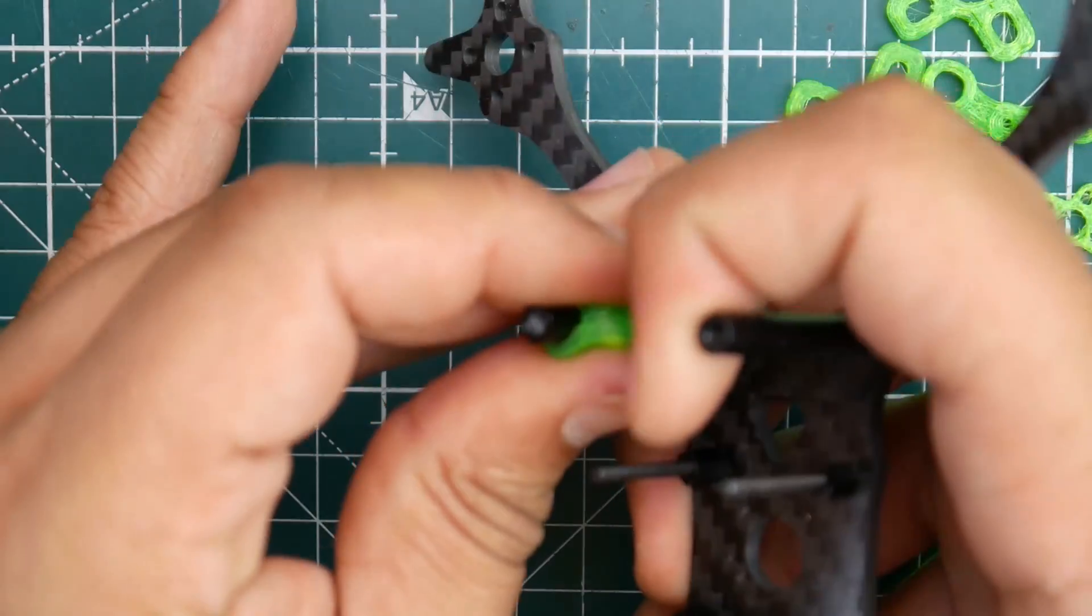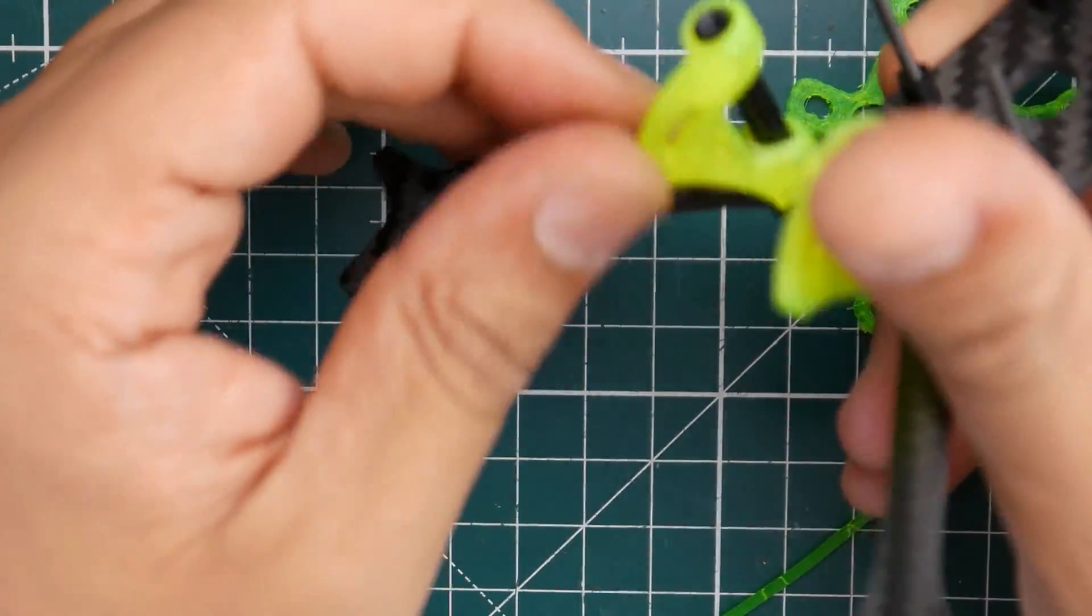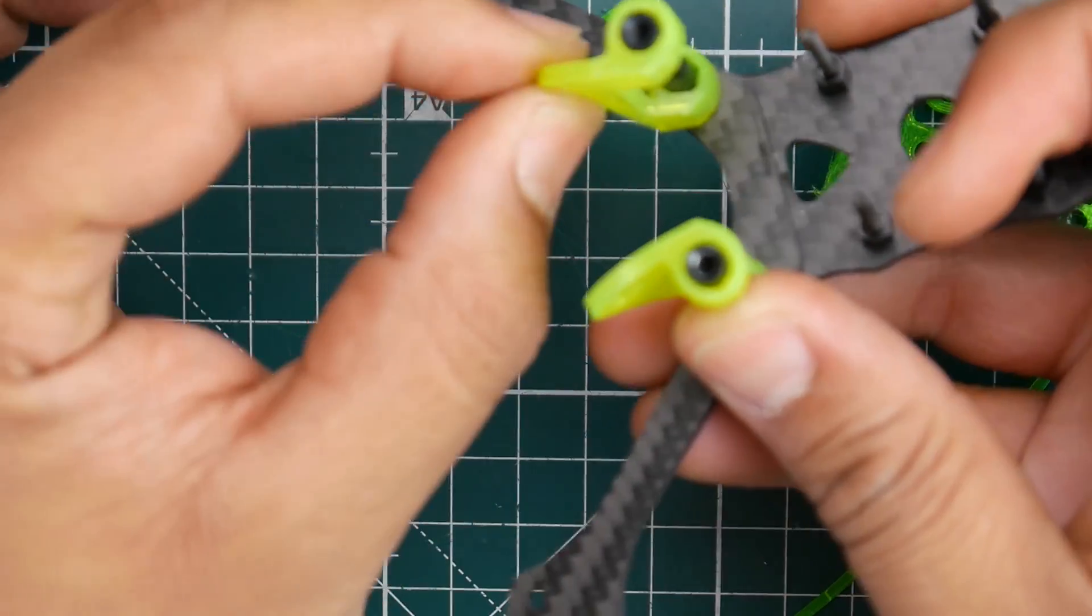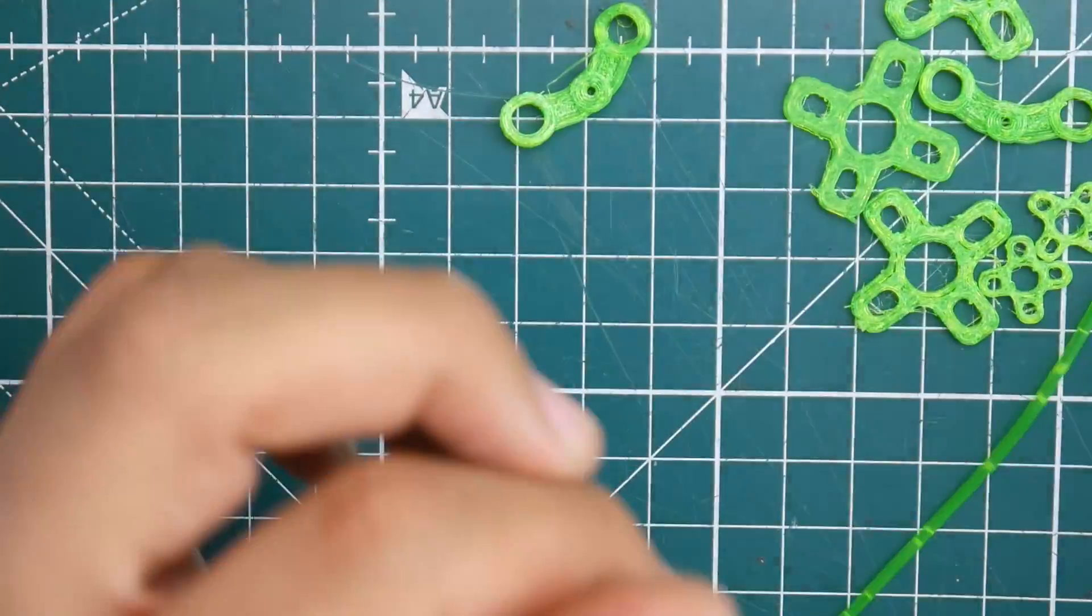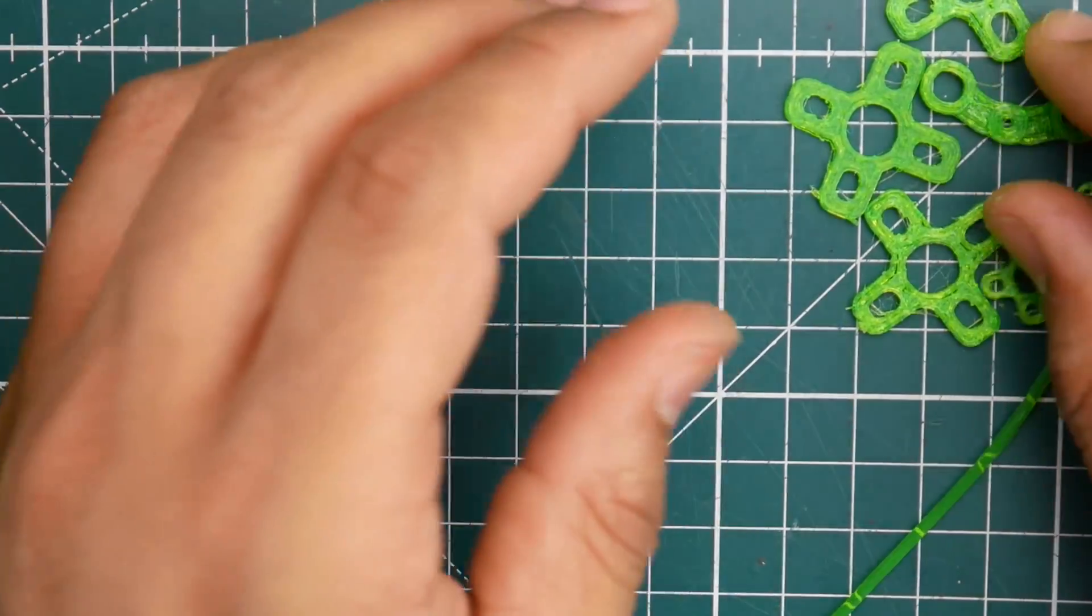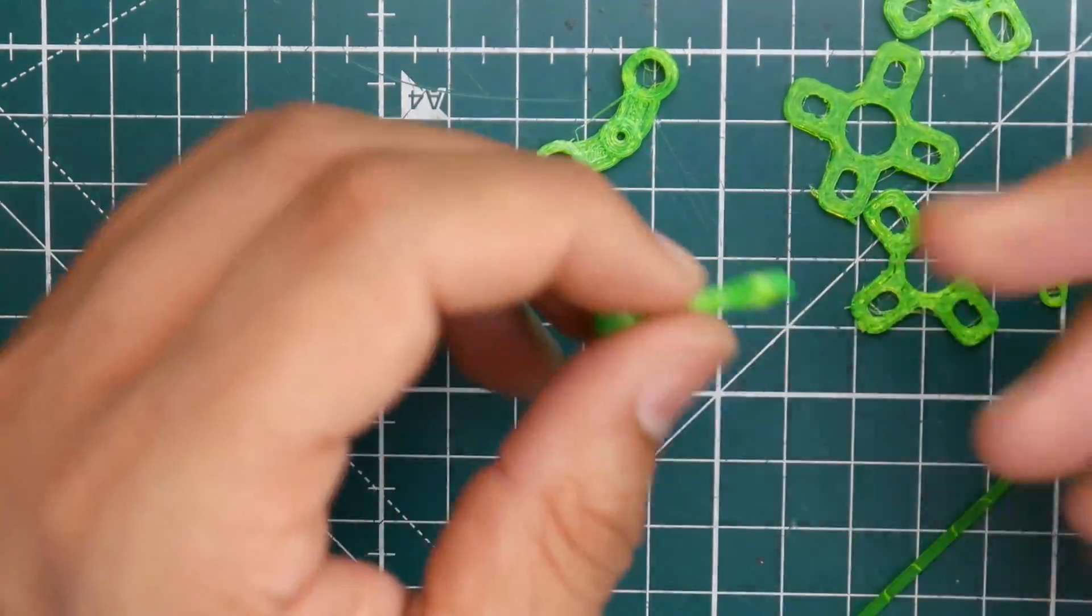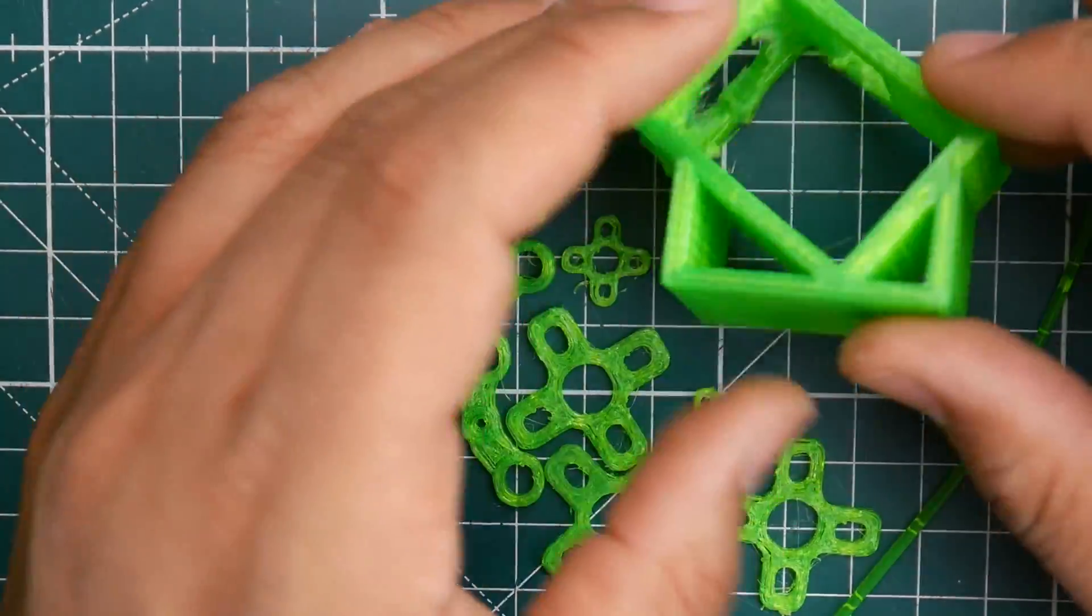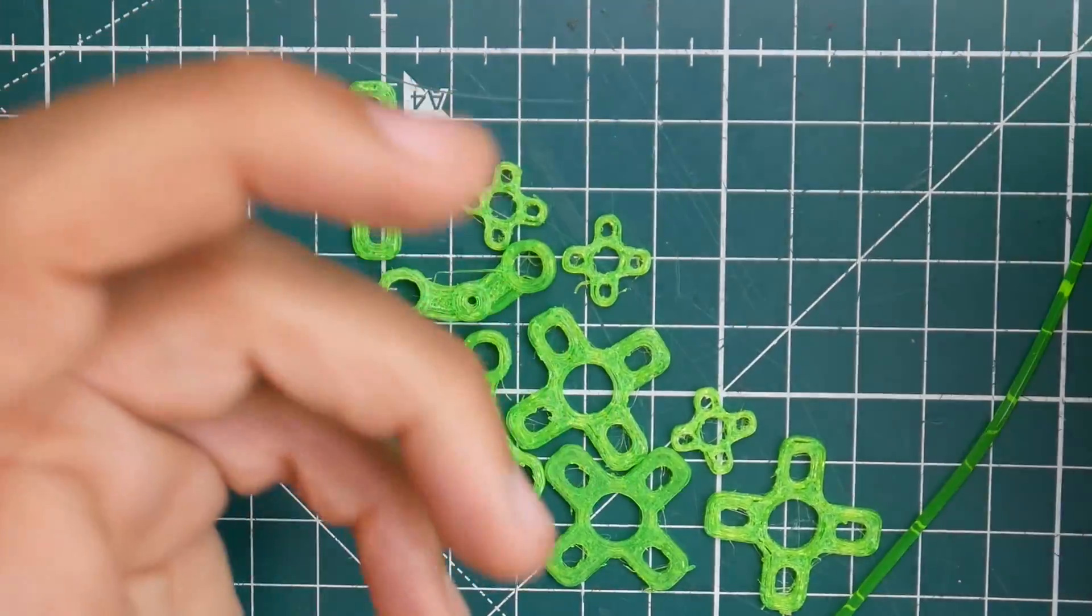And these right here, I didn't print these out, these came with this frame, but they're too flexible as you can tell right there. I don't like how much give that is. That can increase our chances of getting jello in our FPV feed, which is something we don't want.